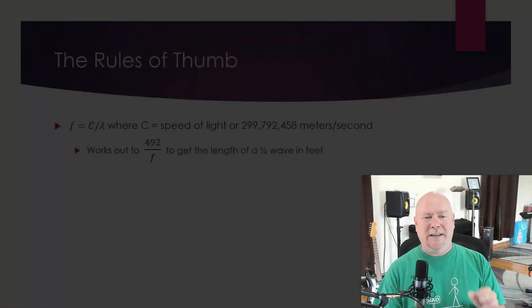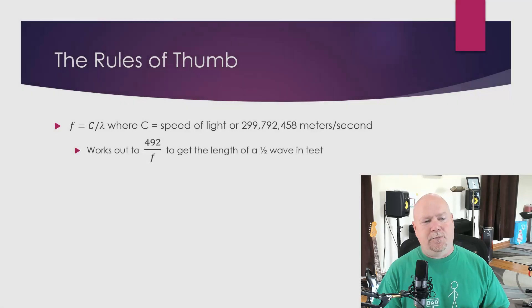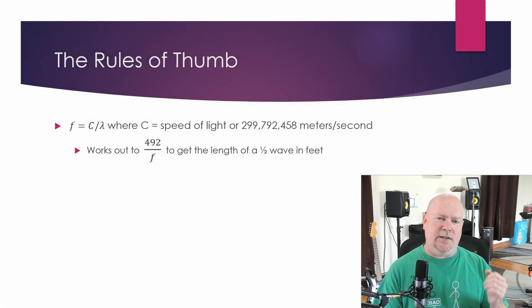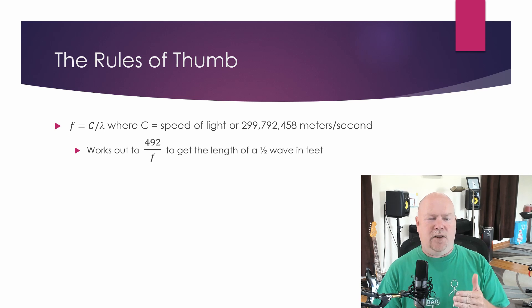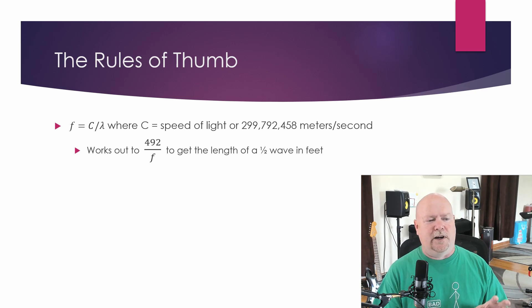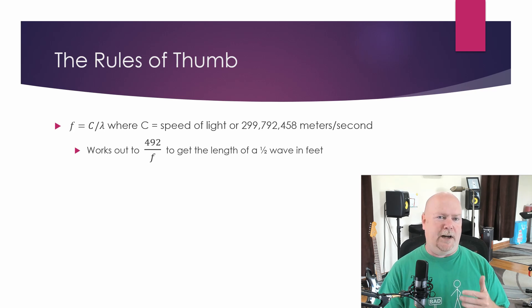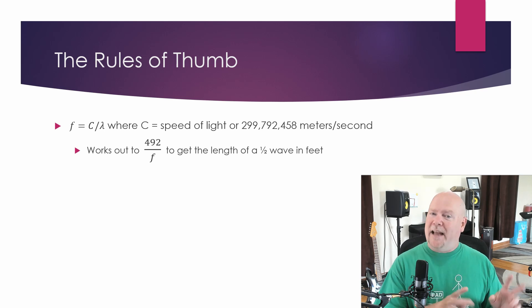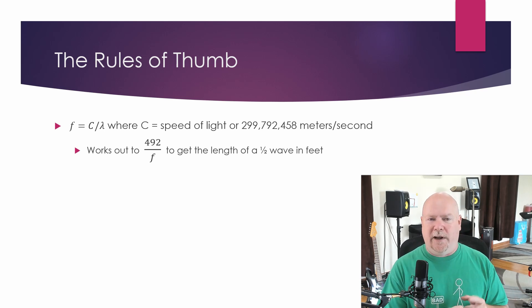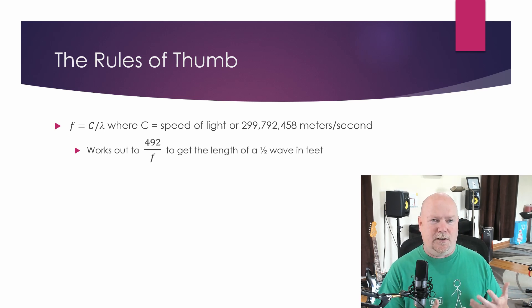Let's look at the old rules of thumb. The physics says that the relationship between frequency and wavelength is based on the speed of light. You take the speed of light, divide by the wavelength, you get the frequency, assuming you're using the right units for everything. And if you simplify that down, you get 492 divided by the frequency in megahertz gives you the length of a half wave. Half wave is what we're usually looking at for an antenna, so that's what all these rules of thumb are based on.